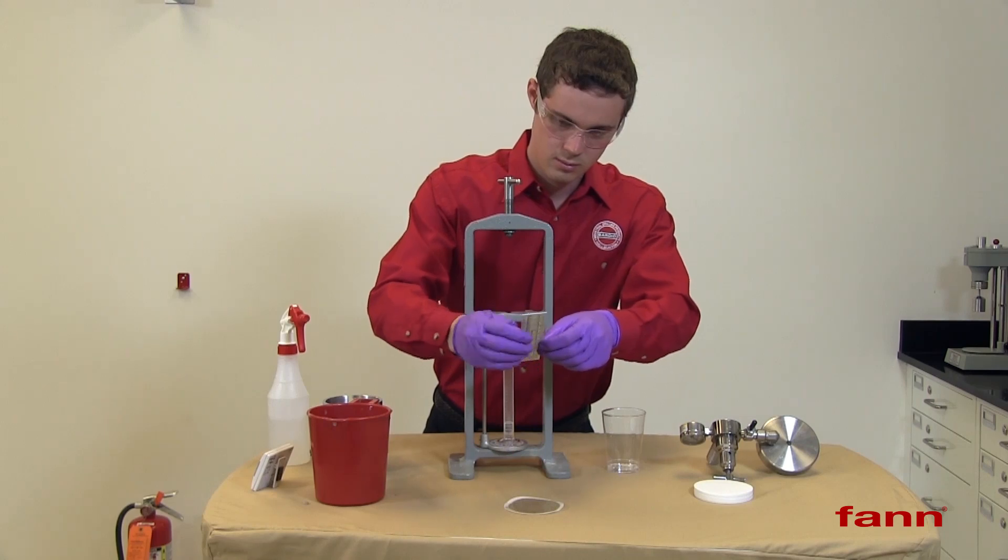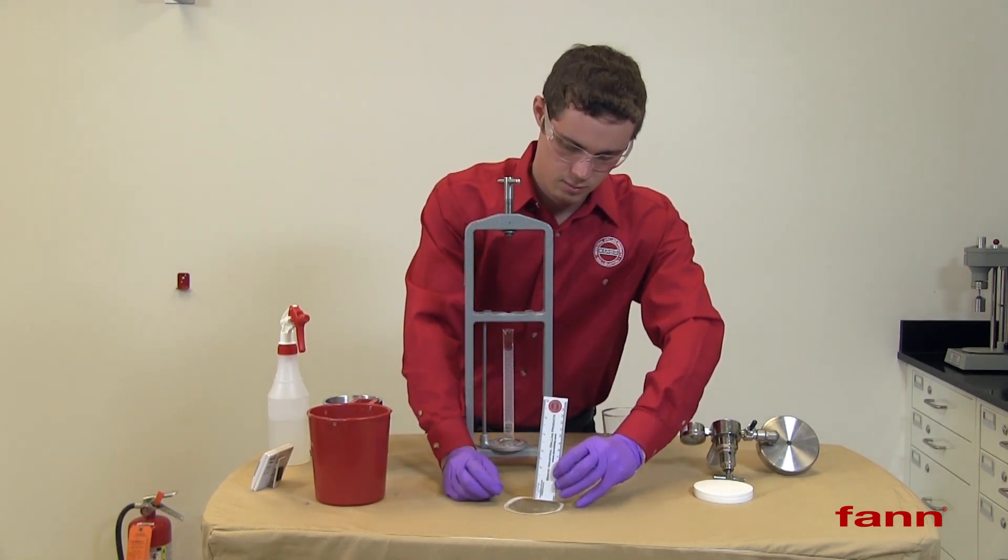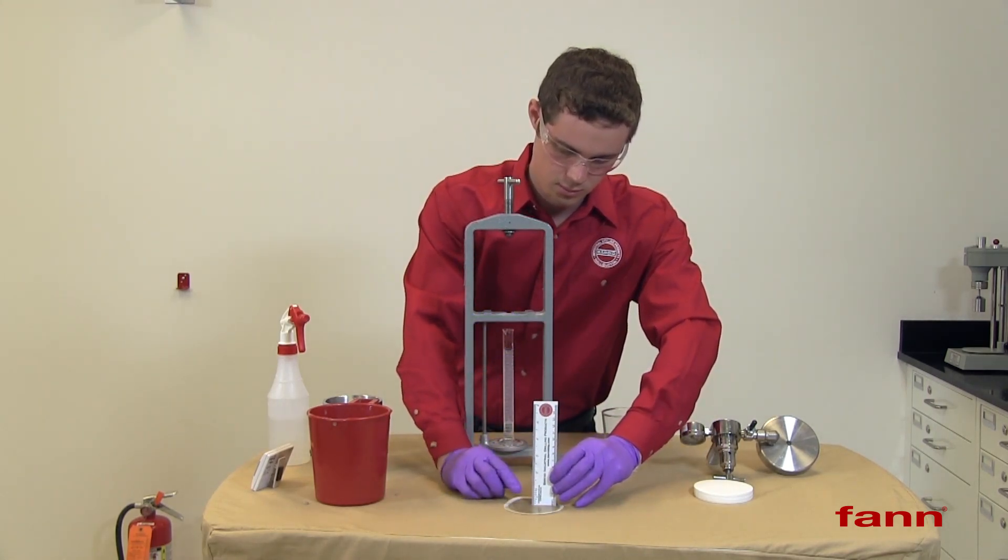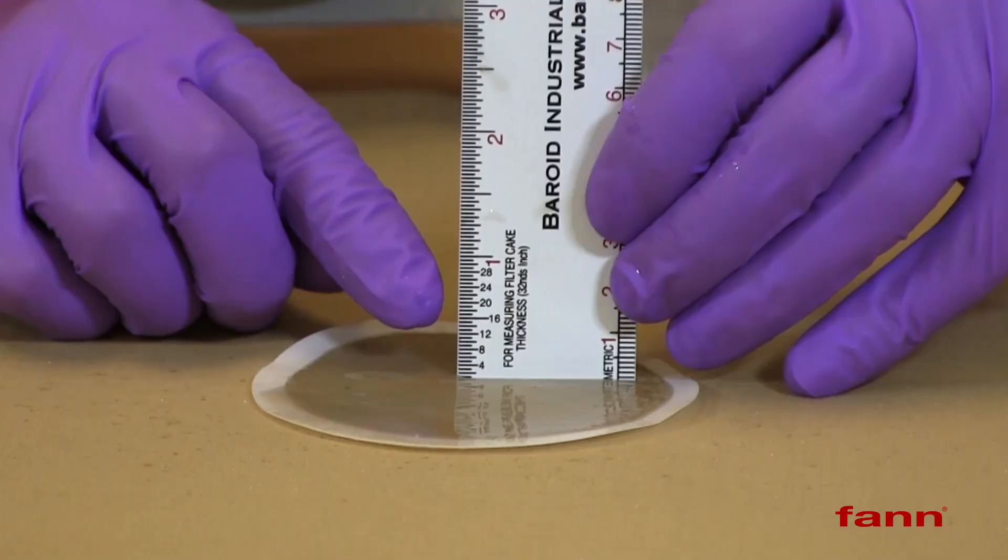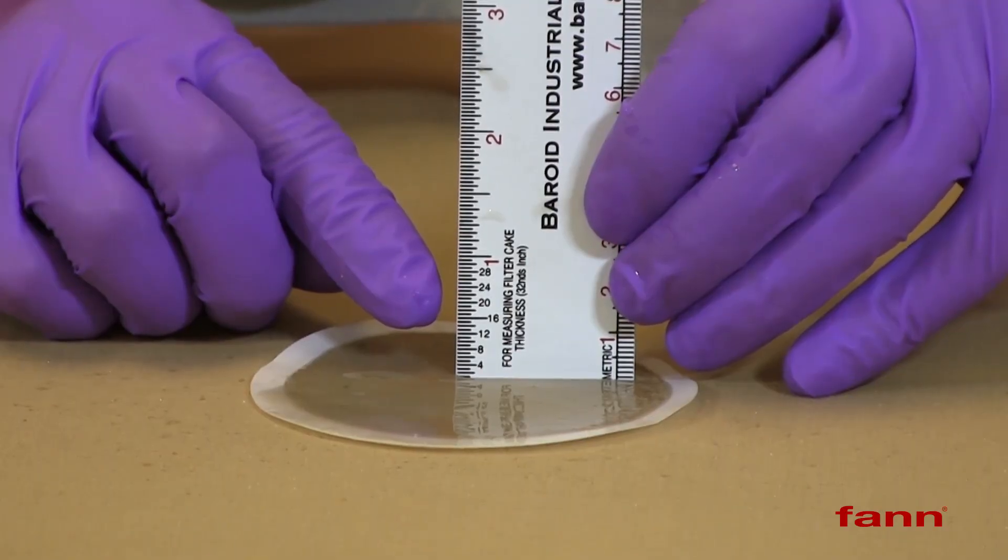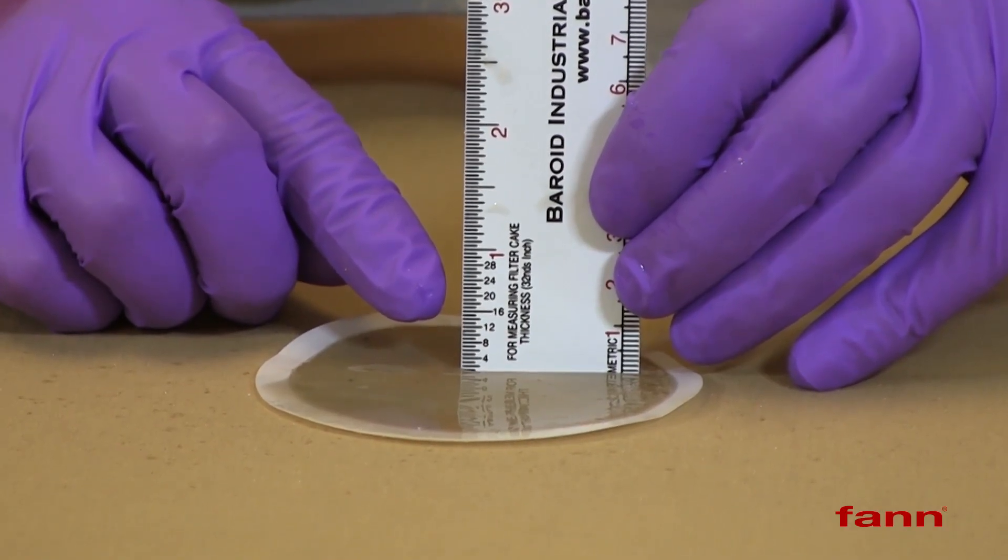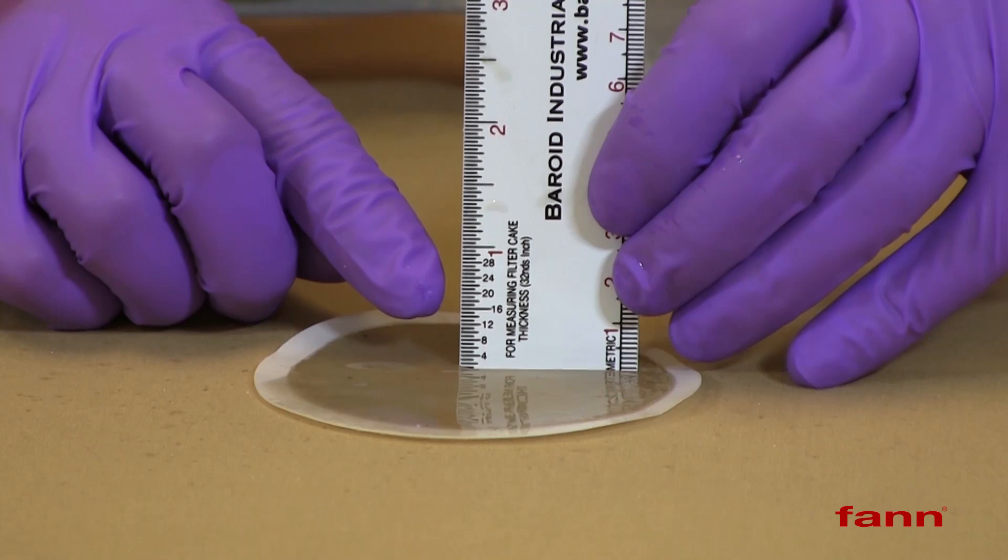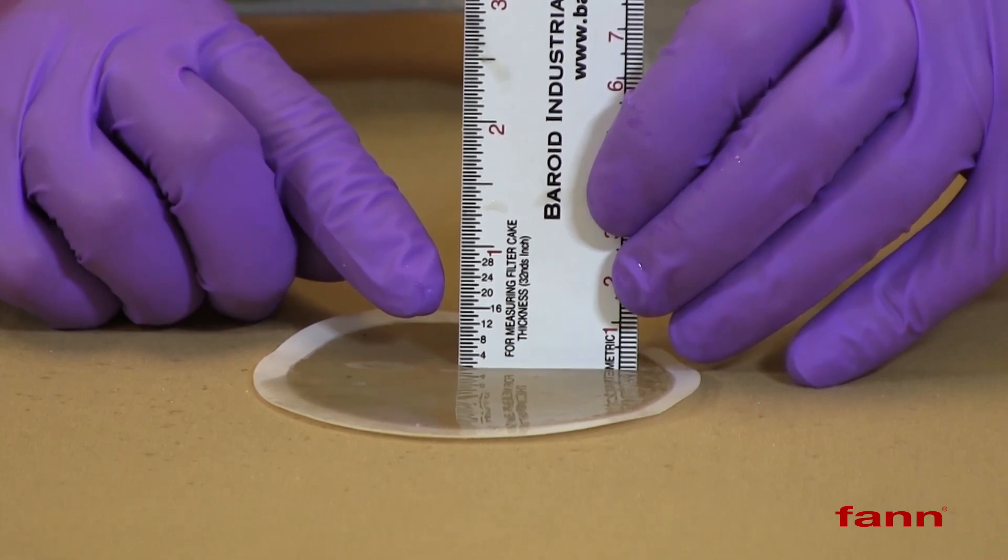Measure the thickness of the filter cake by placing a ruler in the cake and measuring the thickness to the nearest 32nd of an inch or the nearest millimeter. This filter cake is 1/32nd of an inch thick.